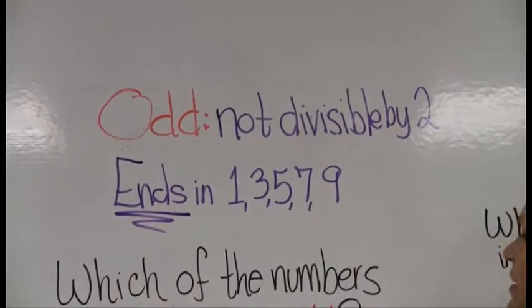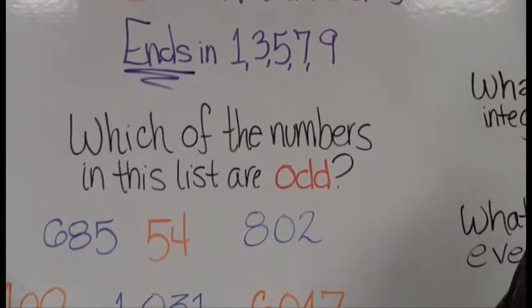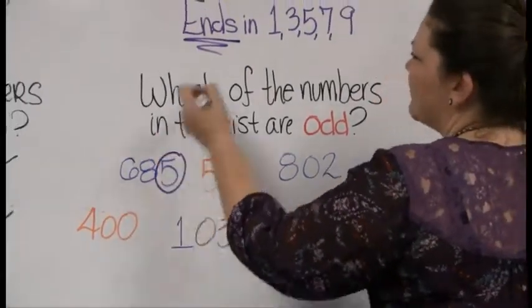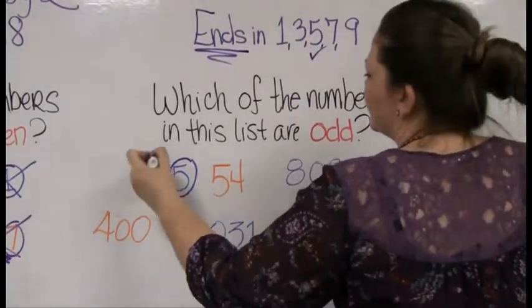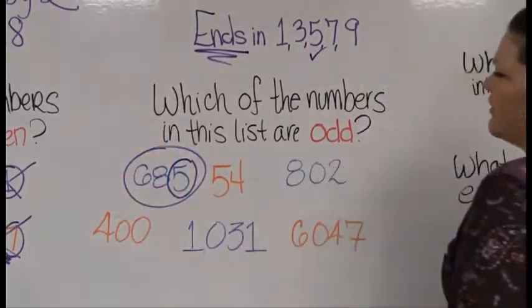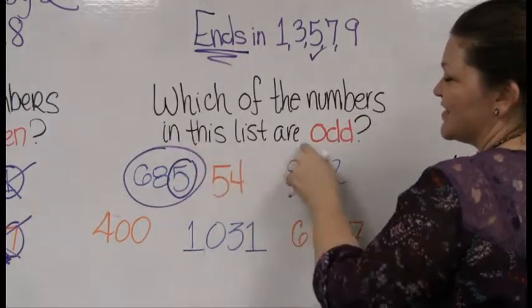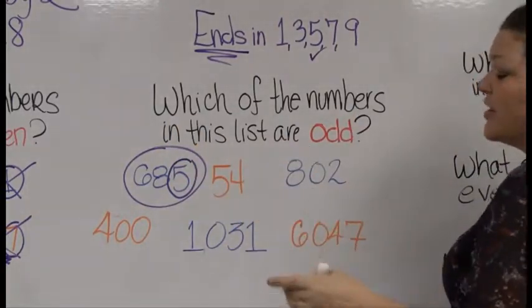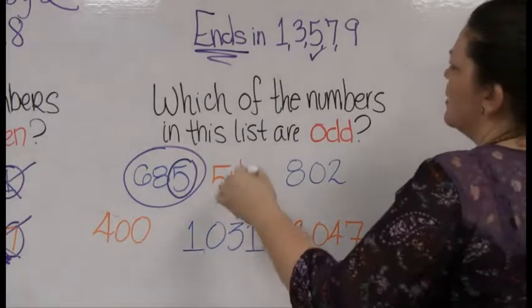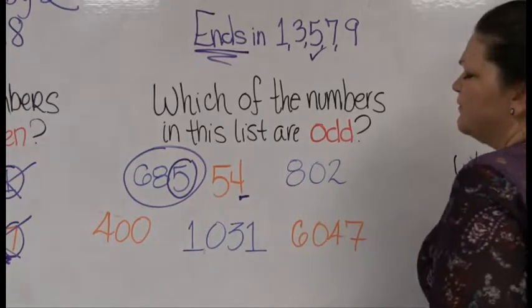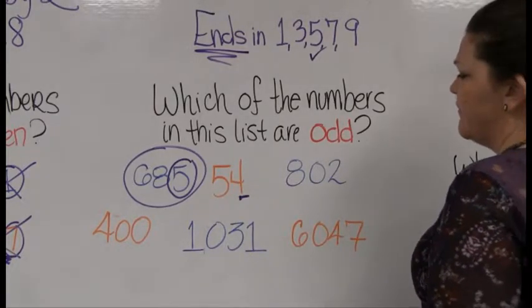And again, remember guys, it's just the end we care about, it's just the butt of the number. So 685 ends in 5, that's on our list, that's odd. Very nice. I didn't even read the question to you guys: which of the numbers in this list are odd? You'll probably already know how to read, but there you go, I hooked you up. Okay, take a look at 54. 54 ends in 4, which is even.